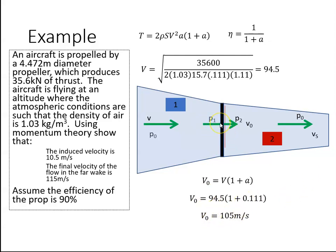So that's the velocity going through here. The velocity here is 94.5. And we're asked to calculate what is the induced velocity. So the induced velocity is just one minus the other, which is 10.5. Or we could multiply 94.5 by 0.11.